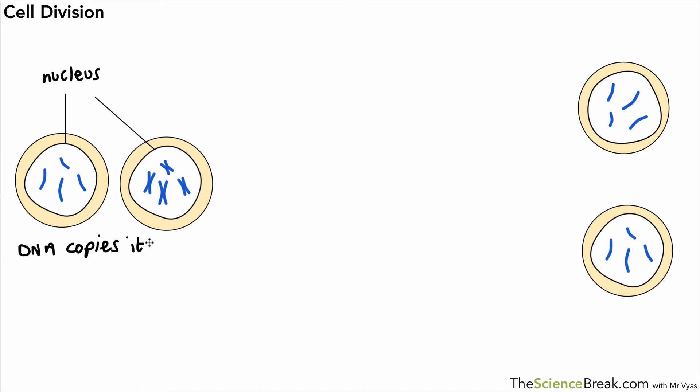In this stage, the DNA copies itself. You can see in the second diagram that the chromosomes have copied themselves and are now sitting in pairs as opposed to single strands. In humans, we have 46 chromosomes; other living things have different numbers.